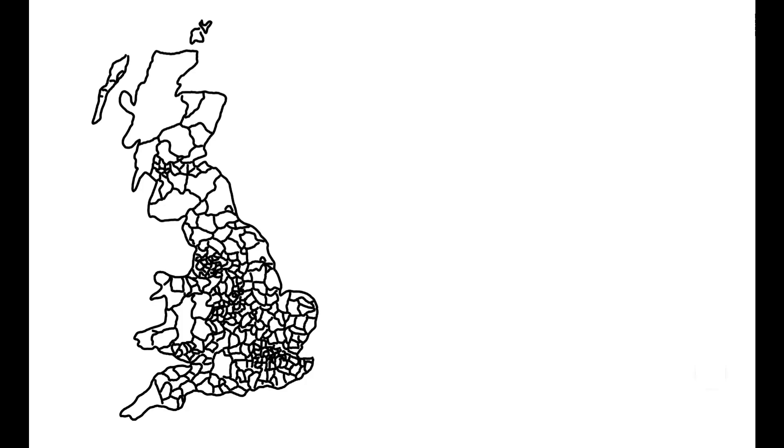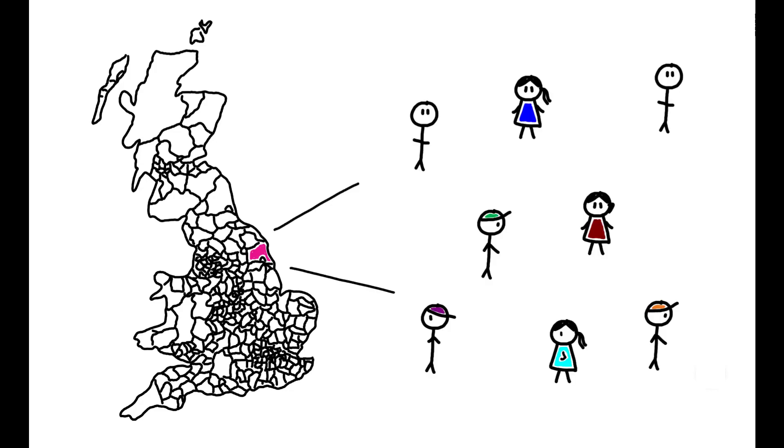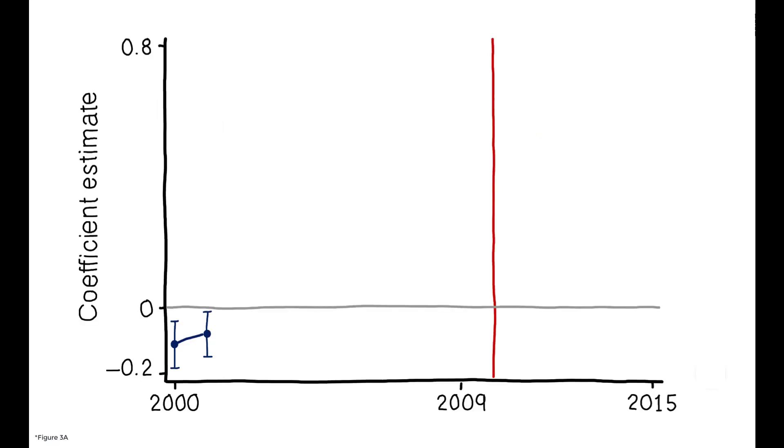To break that aggregate trend down further, the author examines the extent to which UKIP vote shares at the district level are correlated with local demographics. For example, he compares how UKIP support varies with the fraction of local residents who have low levels of schooling. The results show that throughout the early 2000s, there is little correlation between UKIP support and this variable.